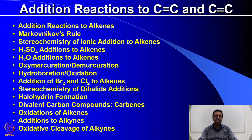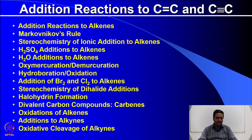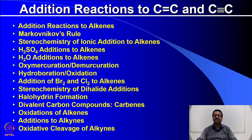In this week we will discuss about the following reactions: addition reactions to alkenes, Markovnikov's rule, stereochemistry of ionic additions to alkenes, sulfuric acid addition to alkenes, water addition, oxymercuration and demercuration, hydroboration oxidation, addition of bromine and chlorine to alkenes, stereochemistry of dihalide additions, halohydrin formation. Then we will talk about divalent carbon compounds called carbenes and additions to alkenes, additions to alkynes, oxidative cleavage of alkynes, and various oxidation and reduction procedures generally done in organic chemistry laboratories.